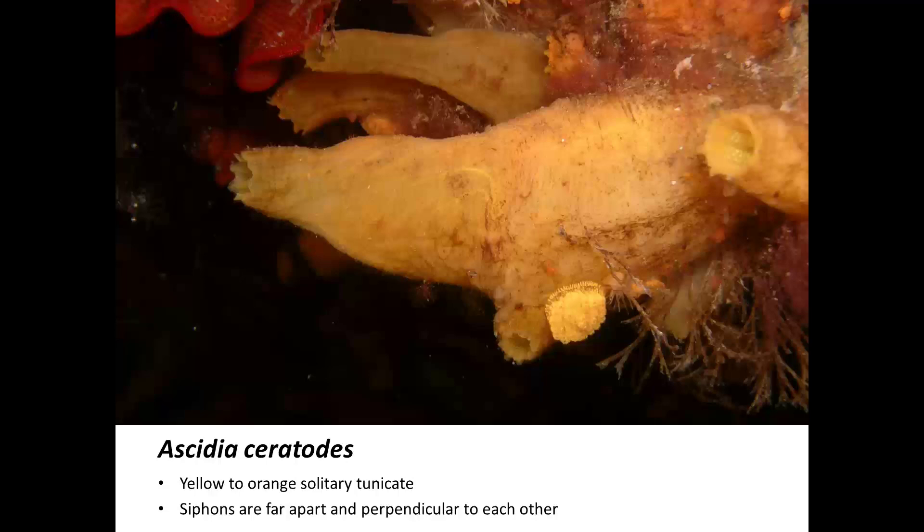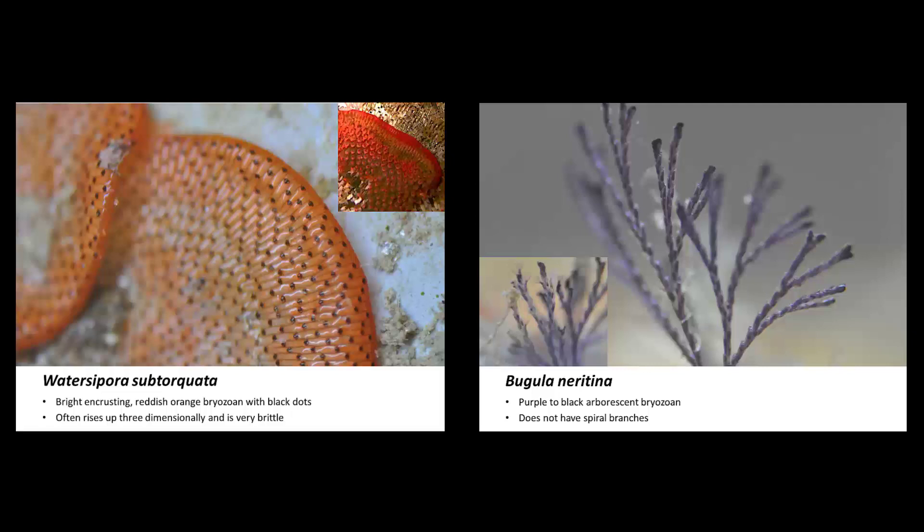Some of the tunicates are not colonial. For example, these are solitary tunicates, and you will find them on older plates. You can also see in this example that there is evidence of overgrowth — this is growing on top of this, and over here this is growing on top of this.